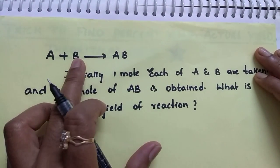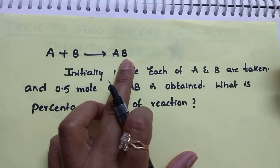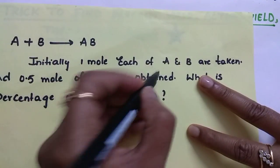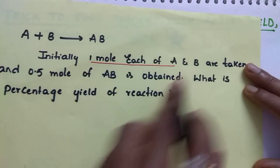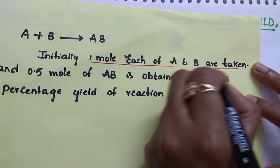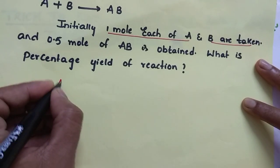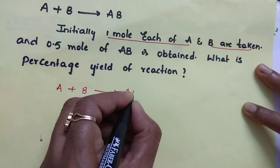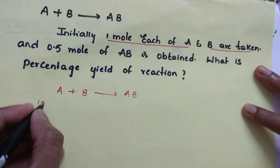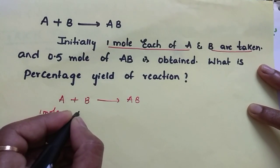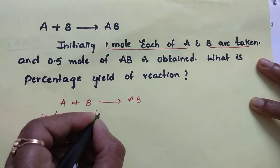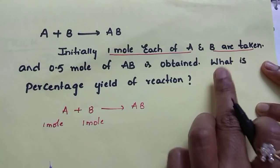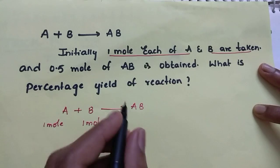For example, A reacts with B and forms AB. Initially, one mole each of A and B are taken. A is reacting with B and we are getting AB. A is one mole, B is also one mole, and 0.5 mole of AB is obtained.